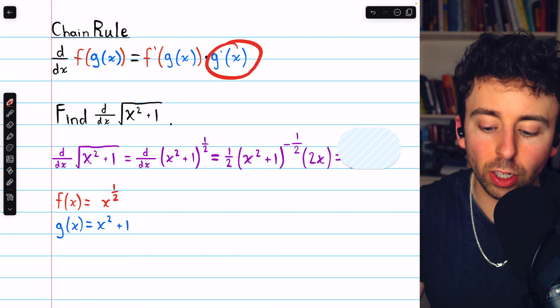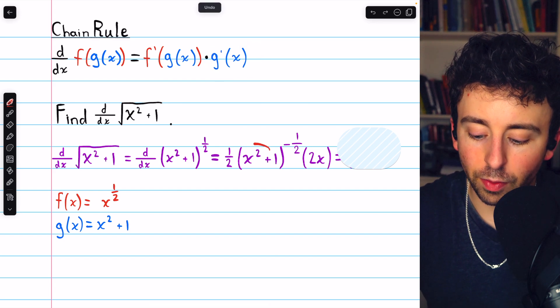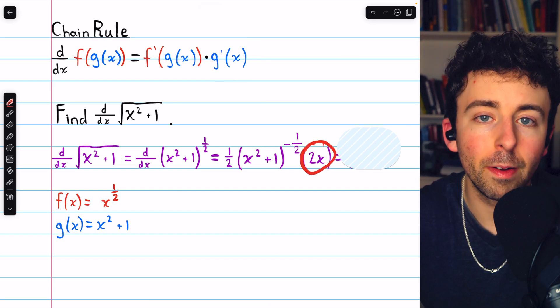But we do have to multiply by g prime of x, the derivative of the inside function. The inside function is x squared plus 1, and its derivative is 2x, so we multiply by 2x.